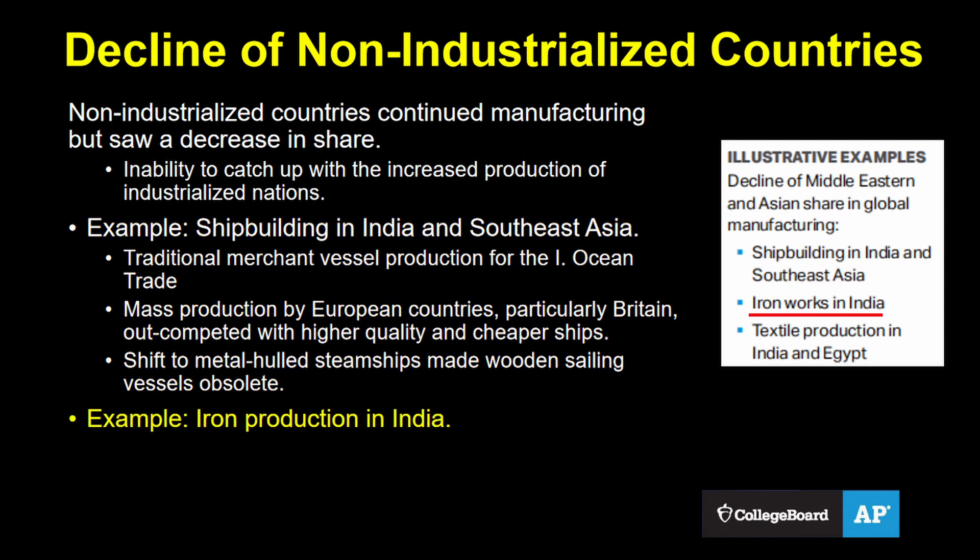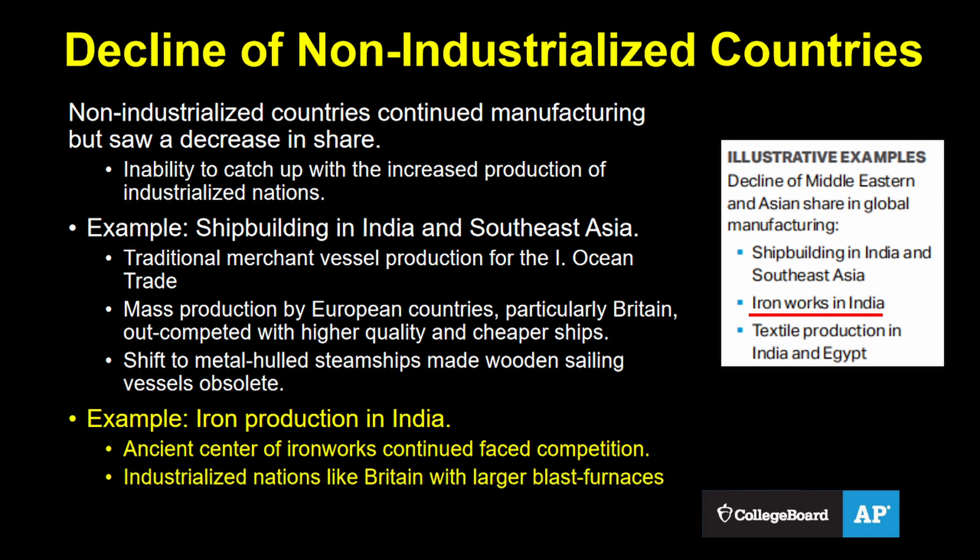Another College Board example is iron production in India. India had, since ancient times, been a major center of ironworks and continued to smelt iron in this period in small furnaces. But once again, states like Britain, who used industrial production and much larger blast furnaces, were able to out-compete Indian producers. Another major reason for India's decline in the share of manufacturing was imperialism, but we'll need to wait for Unit 6 to talk about that.